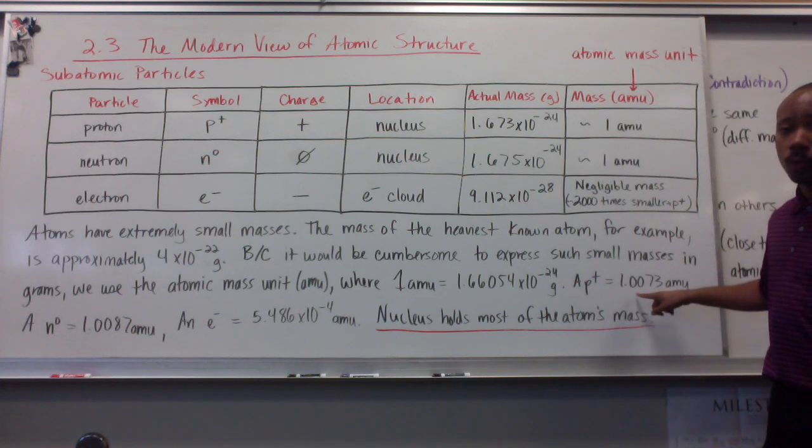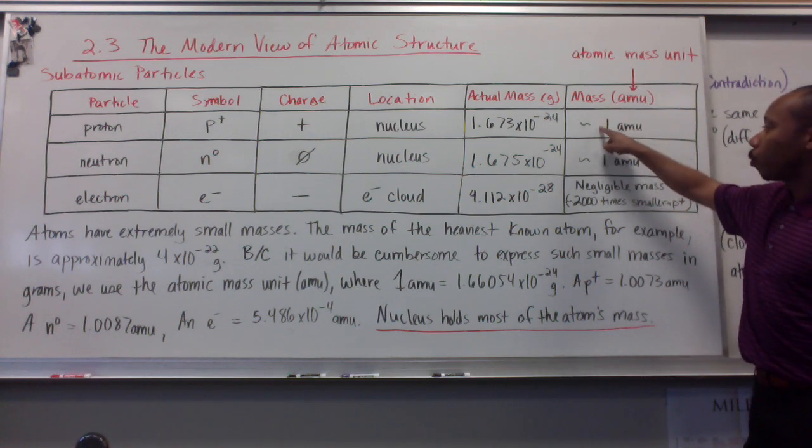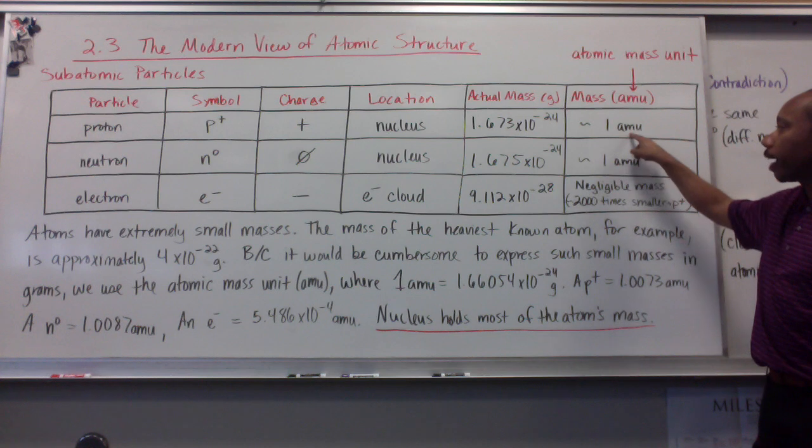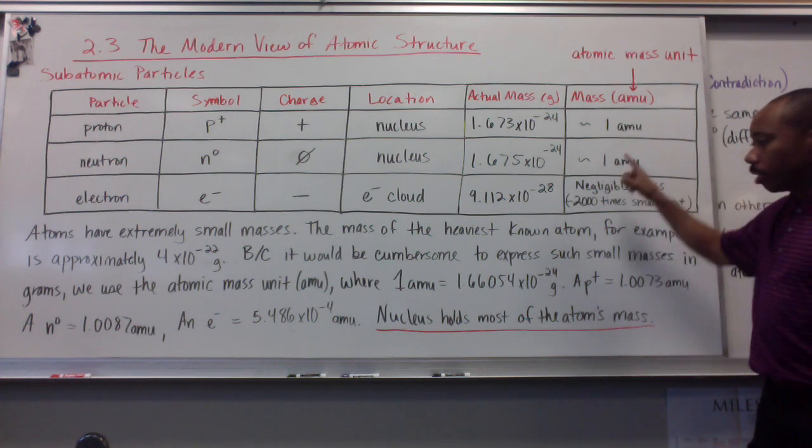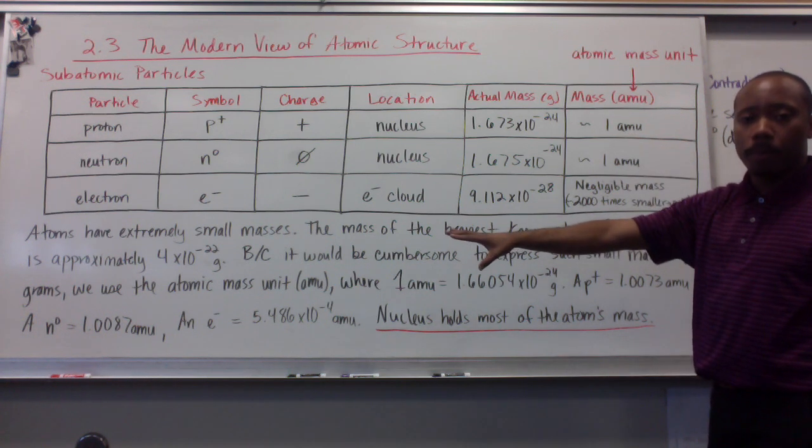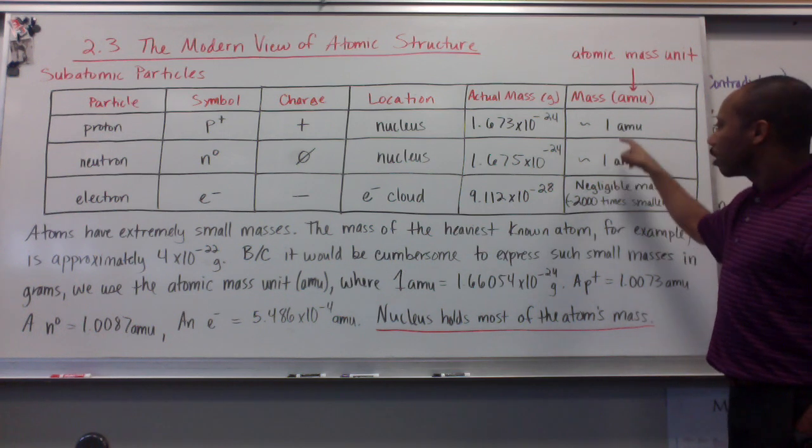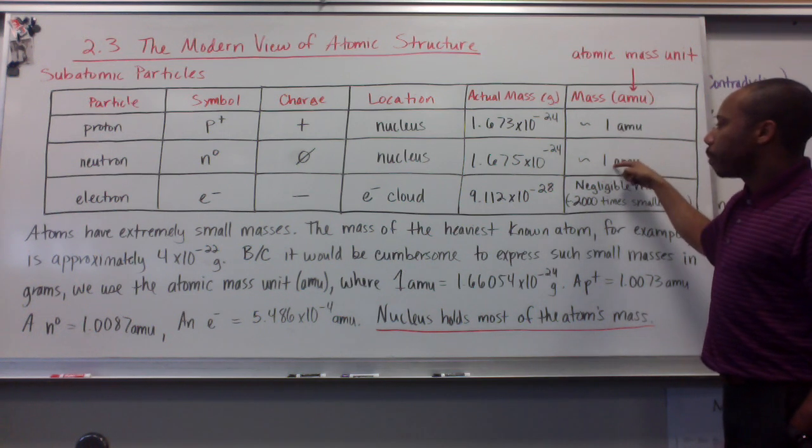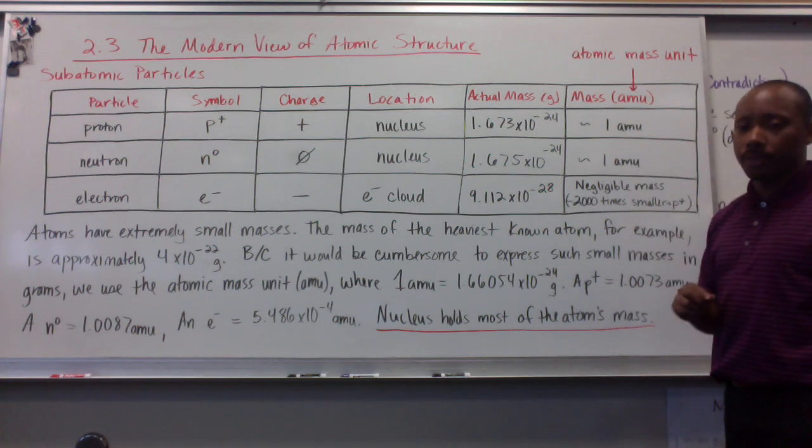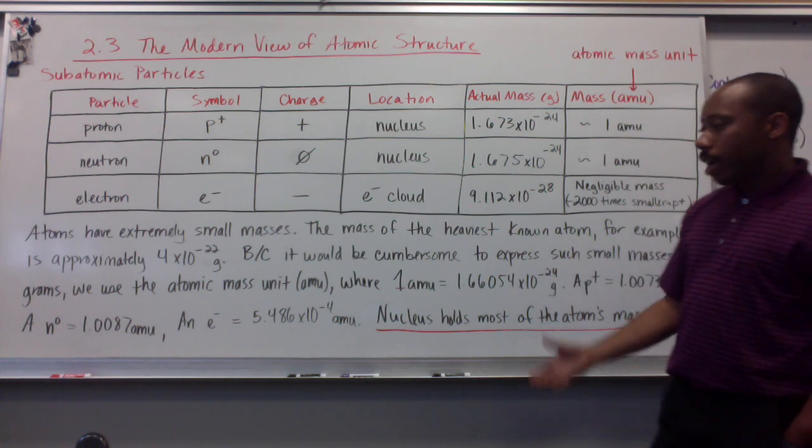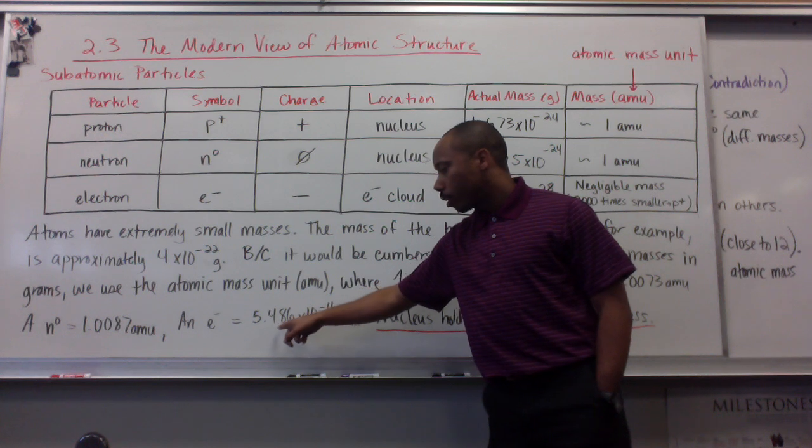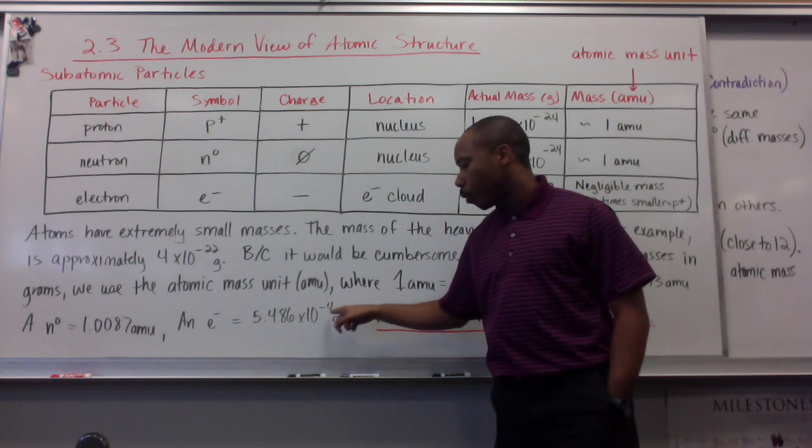This is oftentimes rounded to 1. So, up here for the mass for one proton, it's approximately 1 amu. For a neutron, it's about 1.0087 amu, rounded to 1. So, these essentially have almost the same mass. Neutrons are slightly heavier.